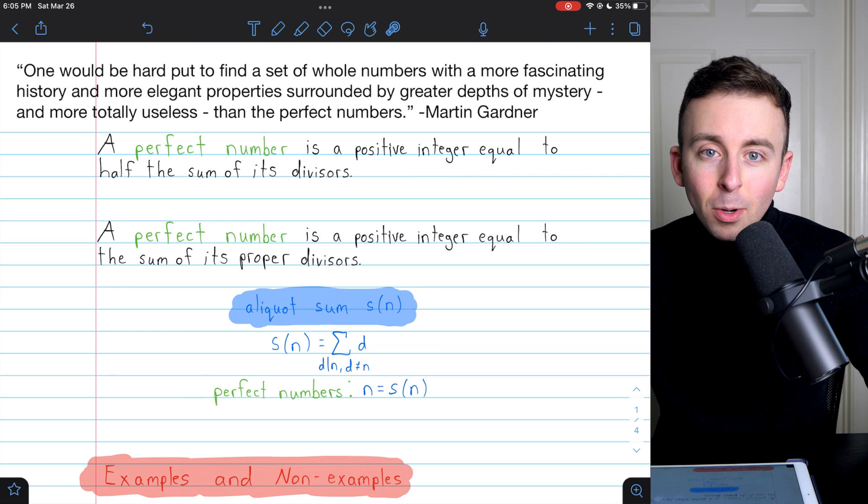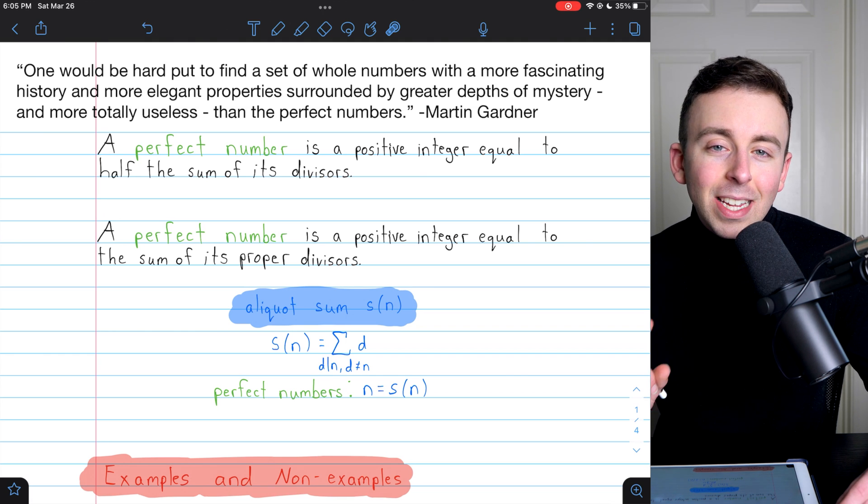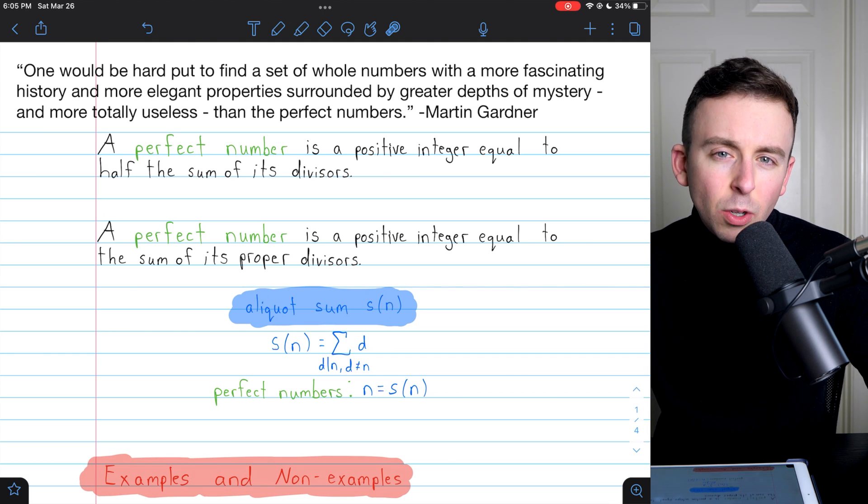Today, we'll introduce perfect numbers, see some examples, some non-examples, touch on a little bit of history, and introduce a really cool theorem called the Euclid-Euler theorem.